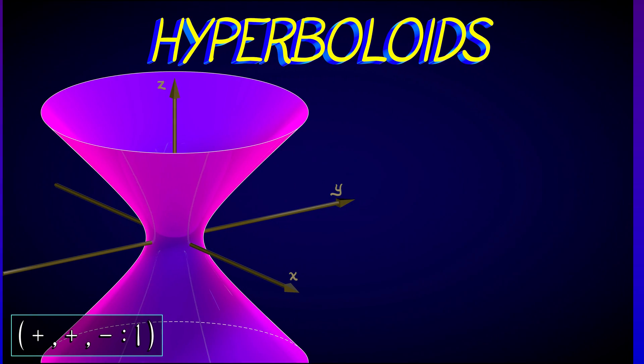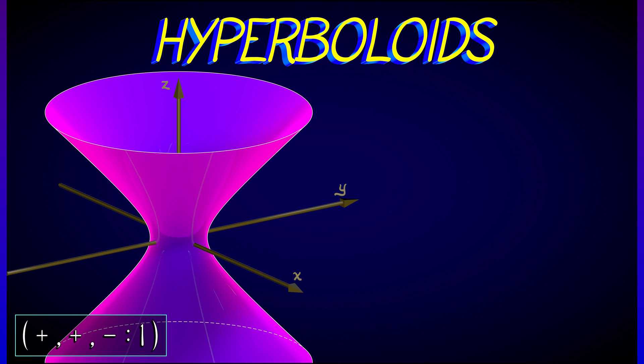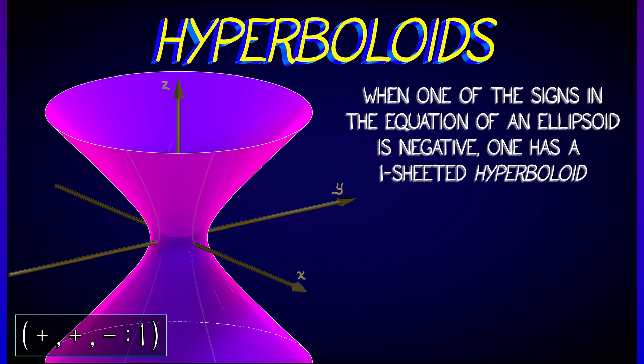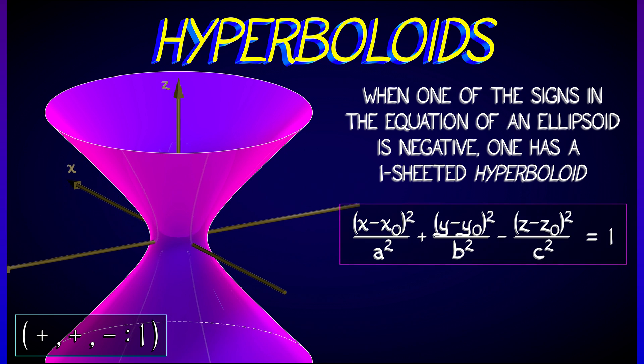One small change will take us from the equation of an ellipsoid to that of a hyperboloid. All we need to do is change one of the signs in front of the x, y, or z term from positive to negative, and we get something that is much less compact.